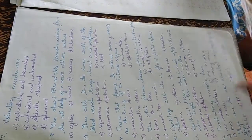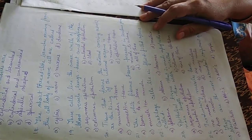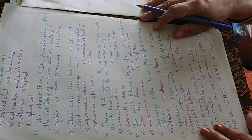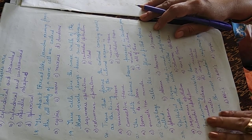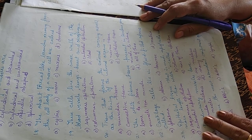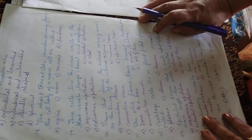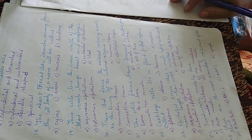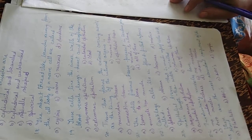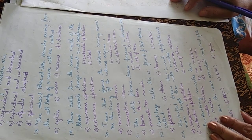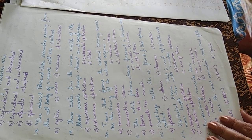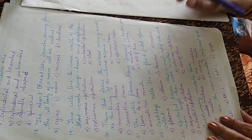The voluntary muscles are: cylindrical and branched, cylindrical and unbranched, or spindle-shaped and spherical. The seventeenth answer is — voluntary muscles are cylindrical and unbranched.